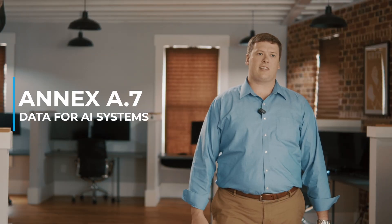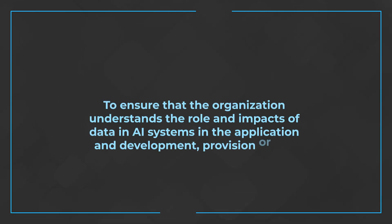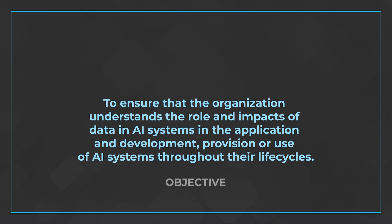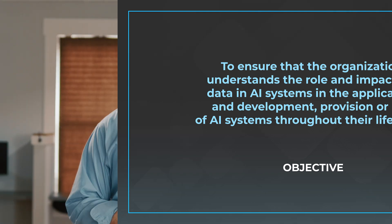The next section is Annex 7, Data for AI Systems. The objective of these controls is to ensure that the organization understands the role and impacts of data and AI systems in the application and development, provision, or use of AI systems throughout their life cycles. So these controls are all centered around the data you're using to train, to run, to enable, to test your AI systems.